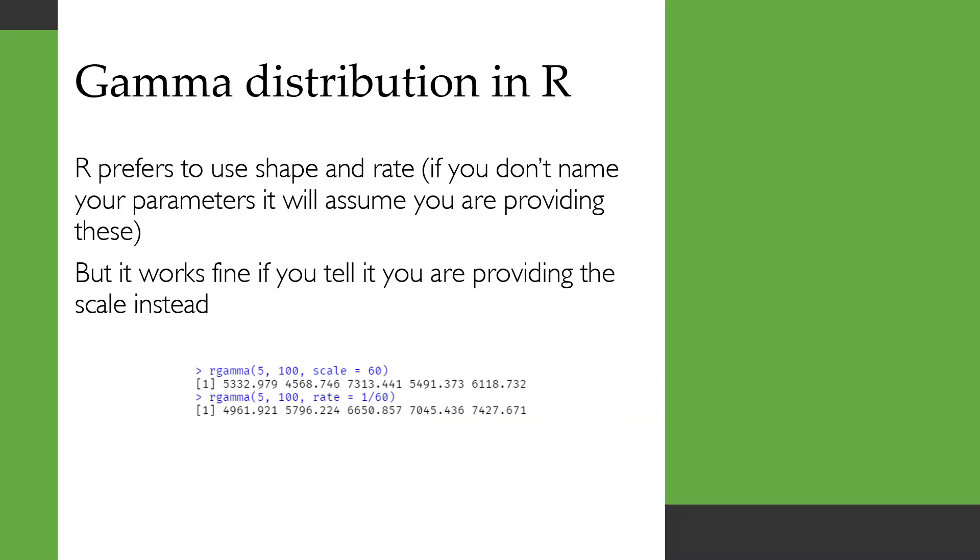R naturally prefers to use the shape and rate, so if you don't name the parameters that you're passing to the function it will assume that you're providing a shape and a rate, but it works perfectly fine if you tell it that you're going to give it the scale. So here we've got rgamma 5 because we want it to give us five random numbers, and our shape parameter is 100 and our scale is 60.